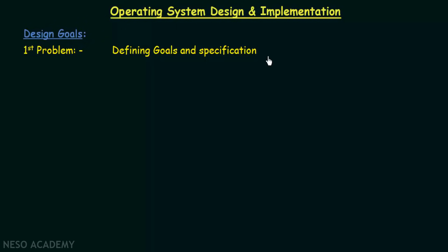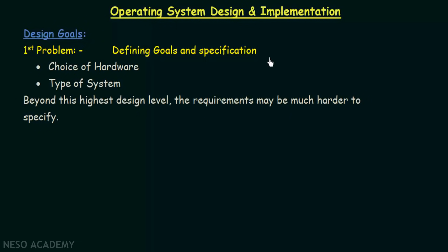It is not actually possible to fulfill all those goals and requirements, which is why we call it a problem. Two requirements we can specify are the choice of hardware — the kind of hardware on which we will build our operating system — and the type of system, which may include multiprocessing systems, multitasking systems, real-time systems, and so on.